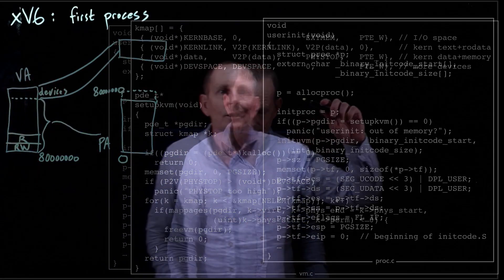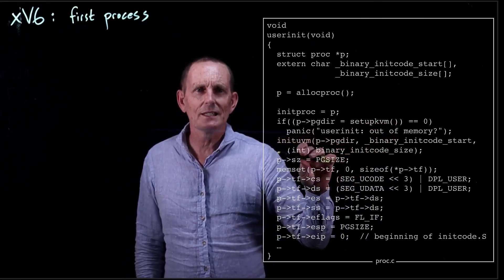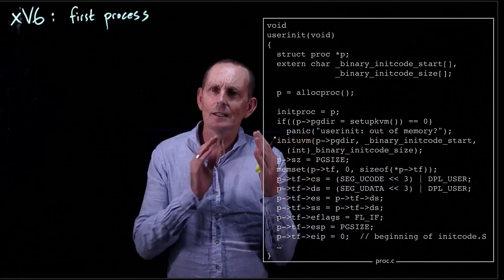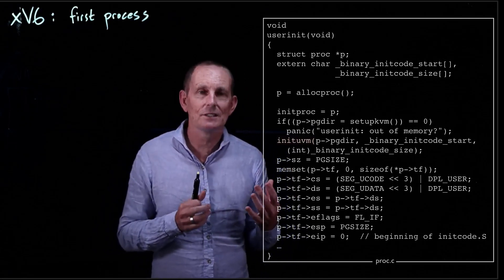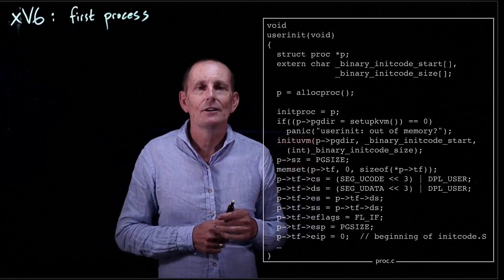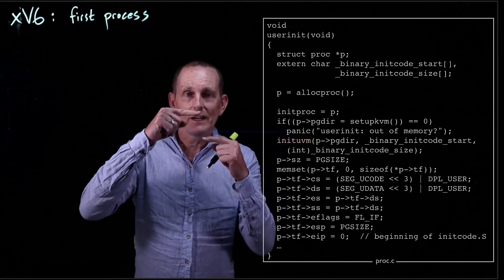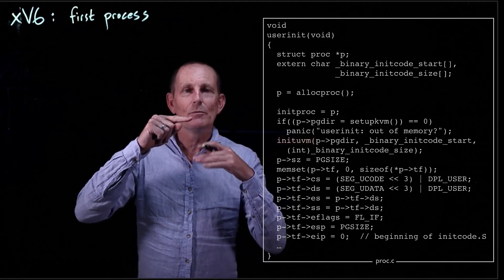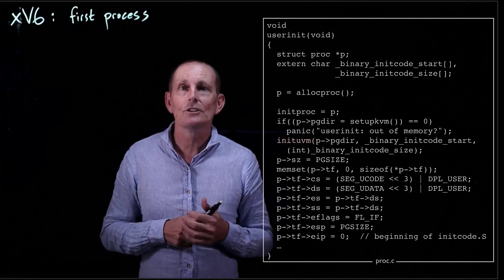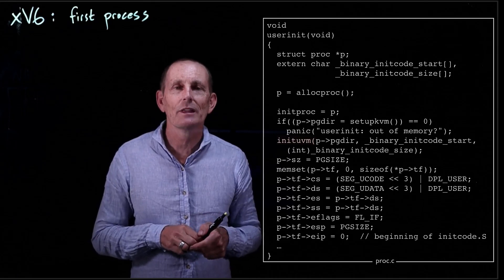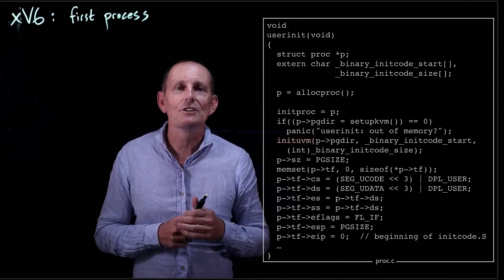Now we've set up kernel virtual memory and will set up user virtual memory for the init code. The init process is unusual — the very first process is intentionally very simple. We don't even have an ELF file. All we have is a single piece of code no more than one page big. We will have just one page for the process, shared by both code and stack. All it does is exec another process. Think of it as a little boot block for initialization — the exec code deals with ELF files, but this very first process does not.